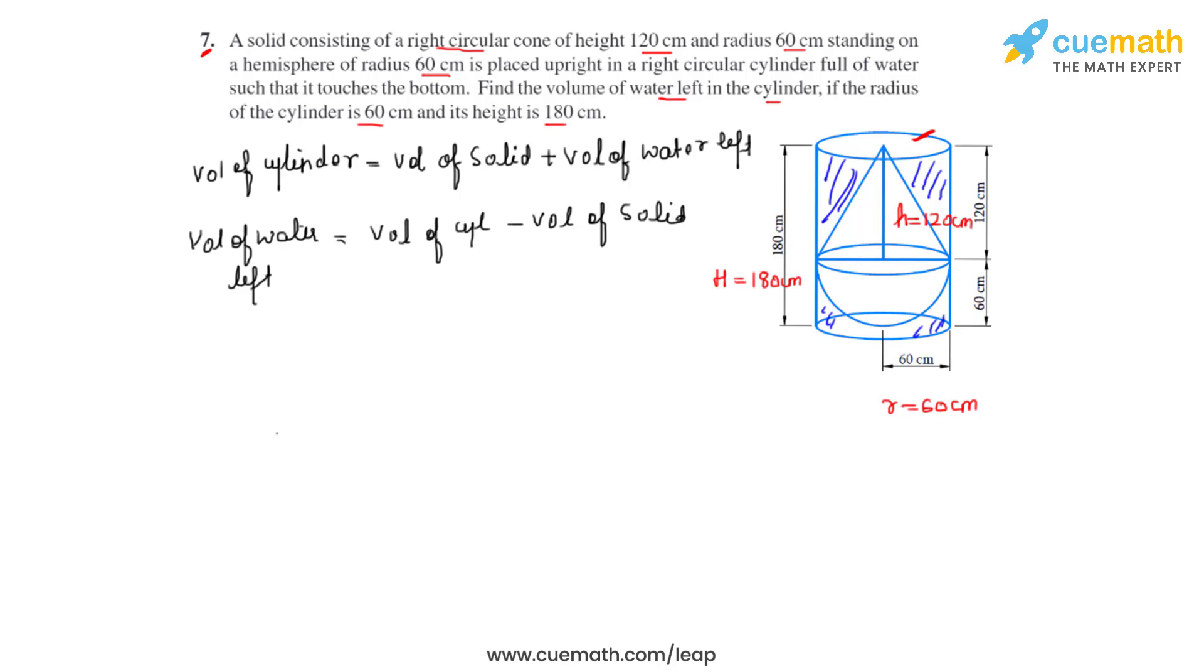So let's substitute the formulas here. Volume of cylinder is πr²h minus volume of solid which is the sum of the volumes of the cone and the hemisphere. We write it as 1/3πr²h minus 2/3πr³.